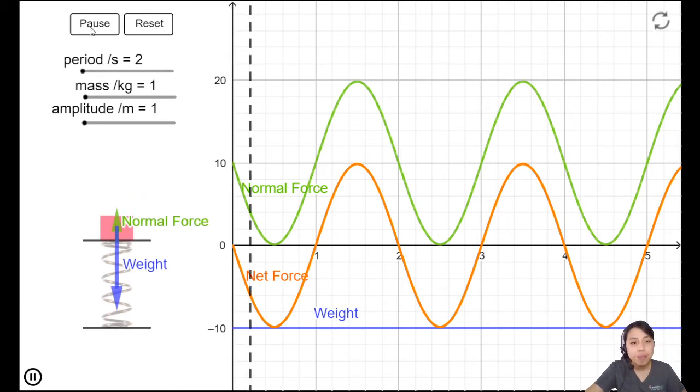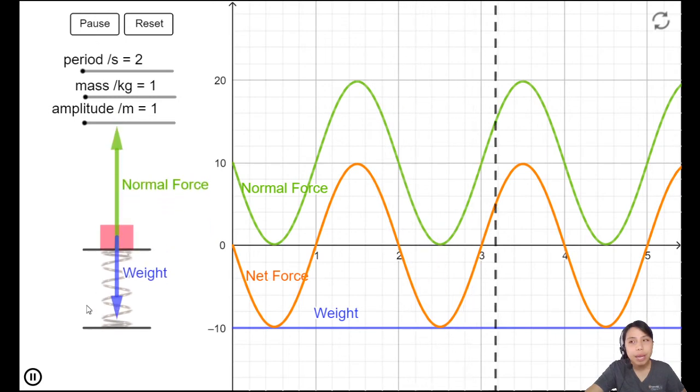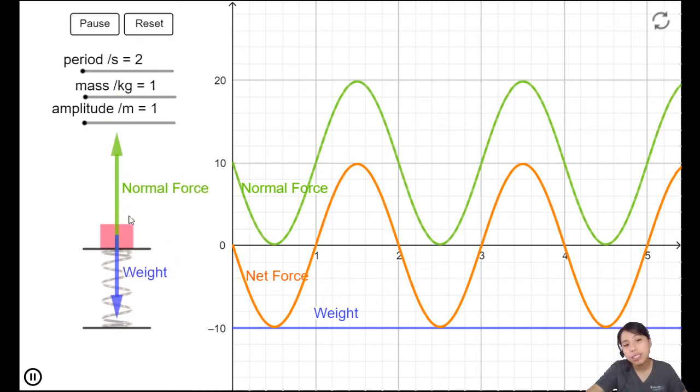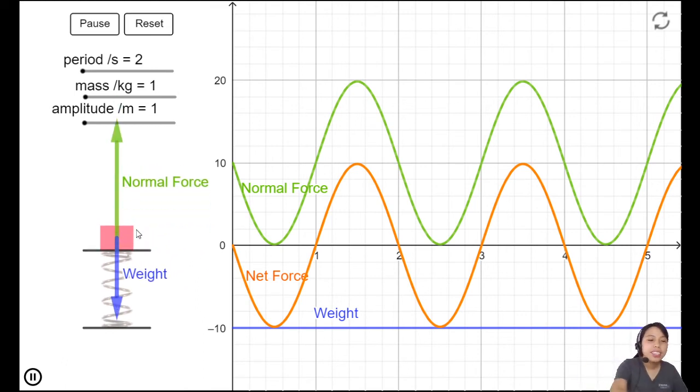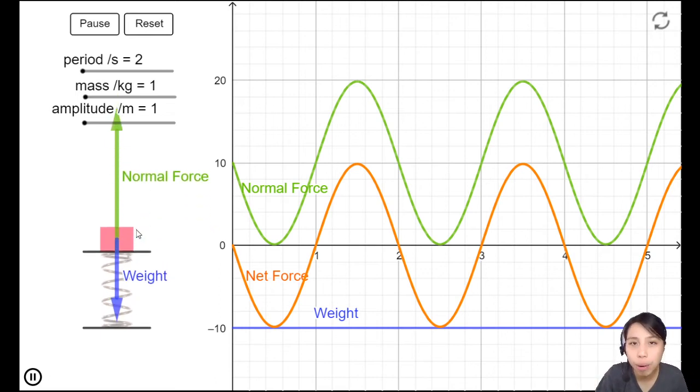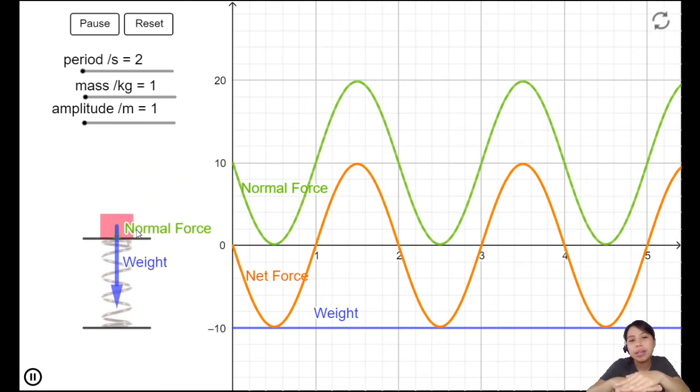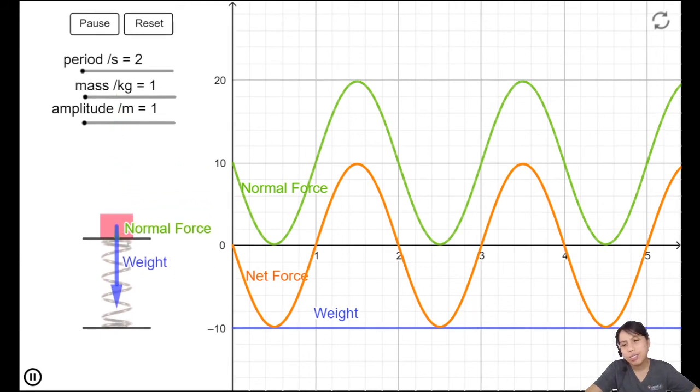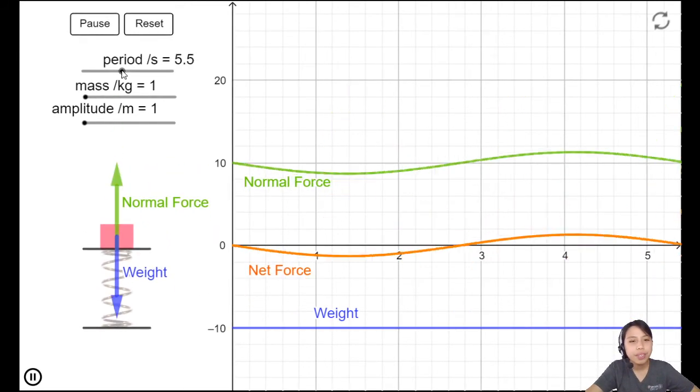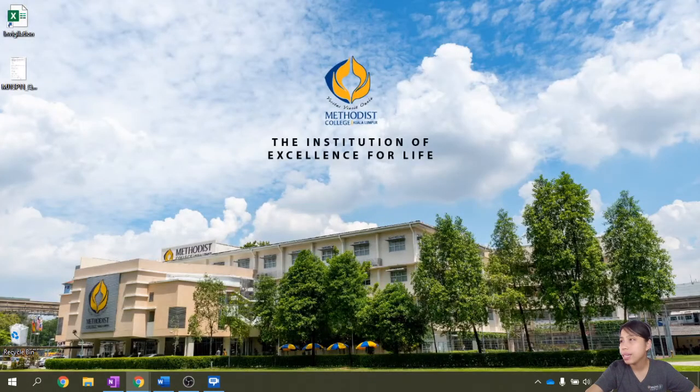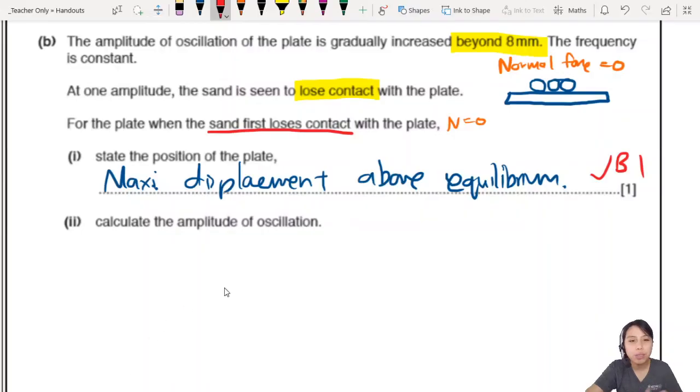This is quite an interesting question. But let me show you an animation here first about this exact problem. When you have normal contact force and weight. Ignore these graphs on the right. Just focus on this thing here. When you are at equilibrium position, there is no net force. Hence no acceleration. That means your weight is equal to the normal contact force acting on the box. We're looking at the box or the sand particle, whatever you want to call it.